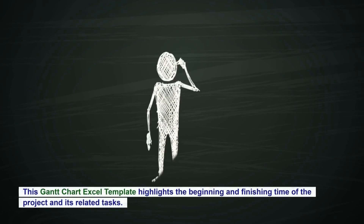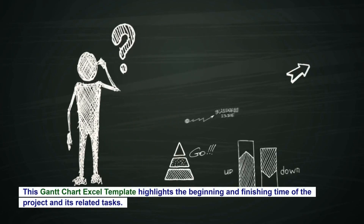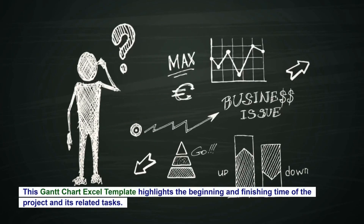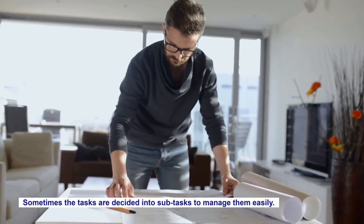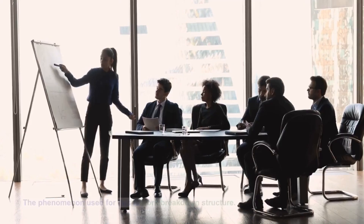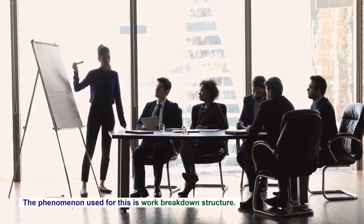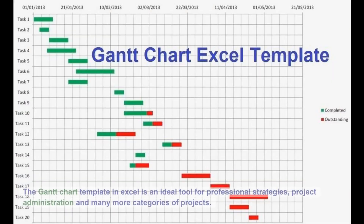This Gantt chart Excel template highlights the beginning and finishing time of the project and its related tasks. Sometimes the tasks are divided into subtasks to manage them easily. The phenomenon used for this is work breakdown structure. The Gantt chart template in Excel is an ideal tool for professional strategies, project administration, and many more categories of projects.